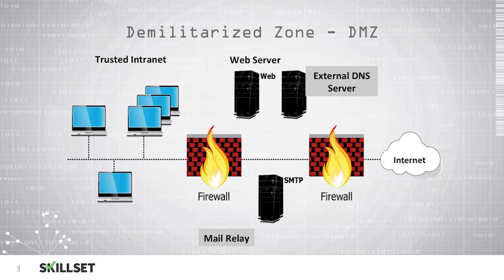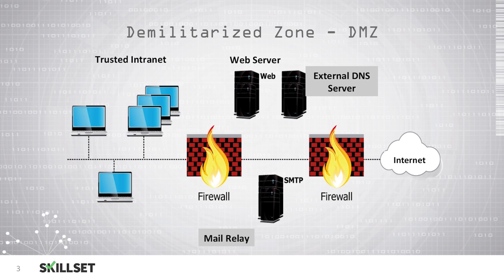Here we have a depiction of what the DMZ might look like. To the left we have our trusted intranet internal network, which we want to protect from all external traffic and threats. We have a firewall between the trusted intranet and our DMZ. In the DMZ we have an SMTP server used for mail relay, a web server hosting our website for external individuals to view, and an external DNS server to respond to requests from outside of our network. We then have an additional firewall between the DMZ and the unsecure internet.